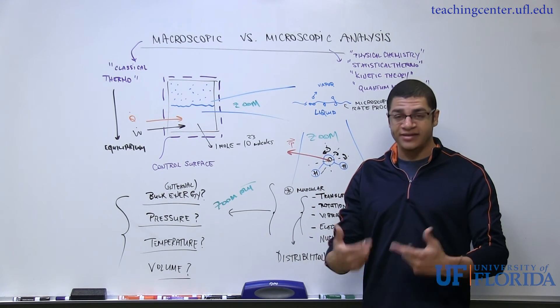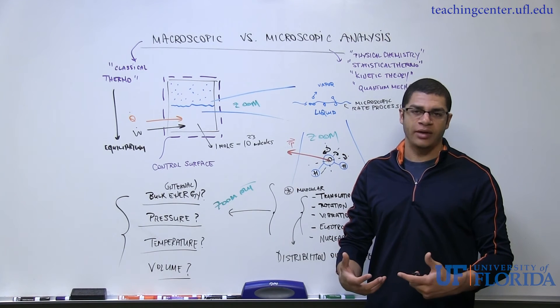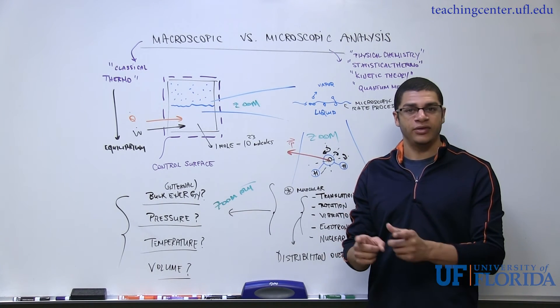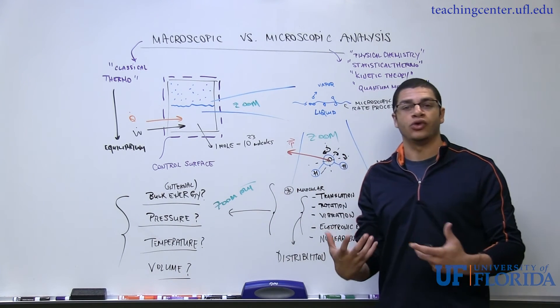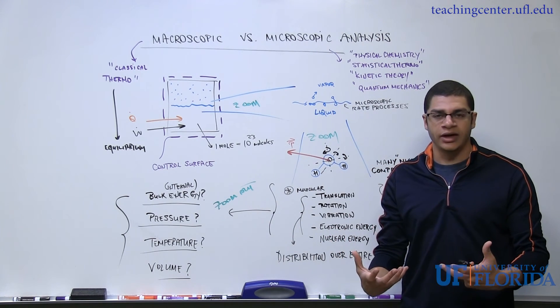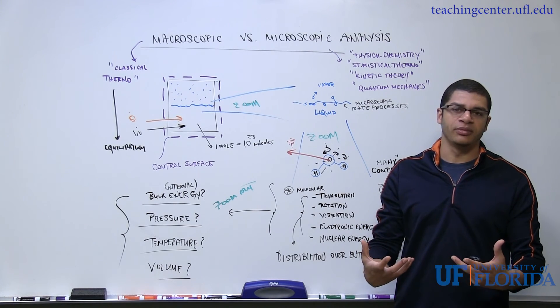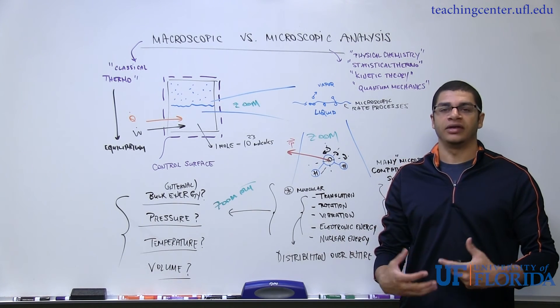Volume is another bulk property that we would be interested in. More specifically, an intensive property. Volume per unit mass gives us what's called a specific volume of the system. The inverse of this property is the density.